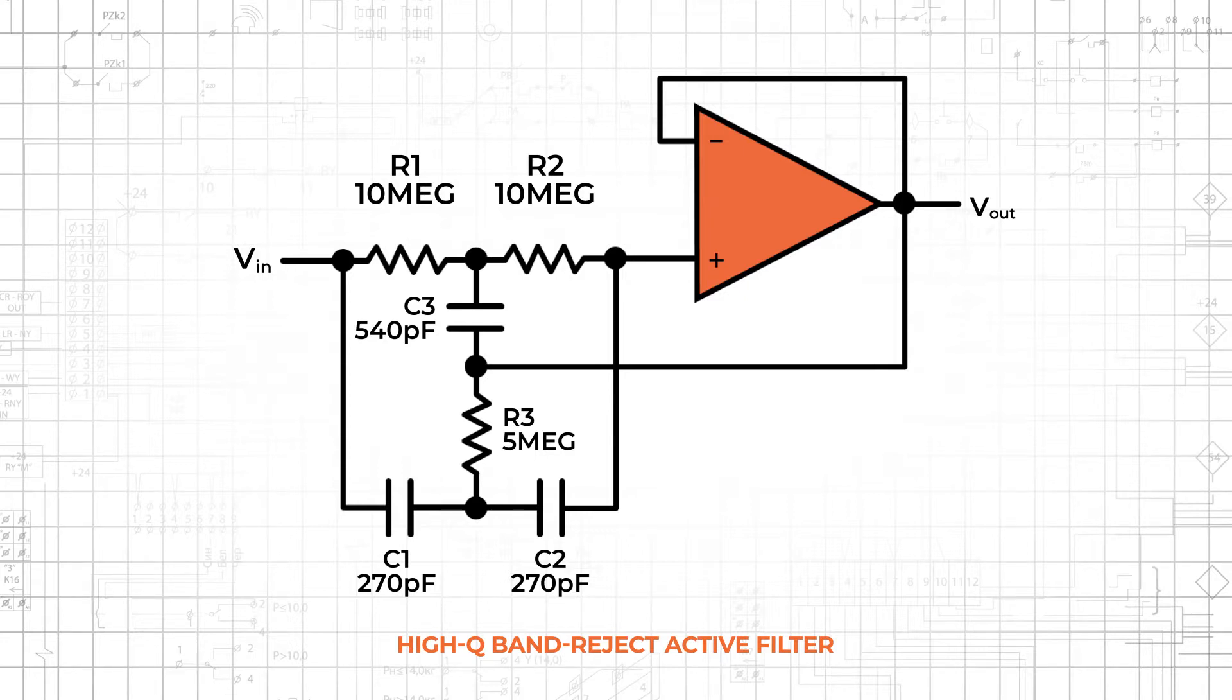Notice that in this schematic, the component values are chosen such that R1 equals R2, R1 equals 2 times R3, C1 equals C2, and C1 equals C3 divided by 2. The notch frequency is calculated as 1 over 2 pi times R1 times C1.